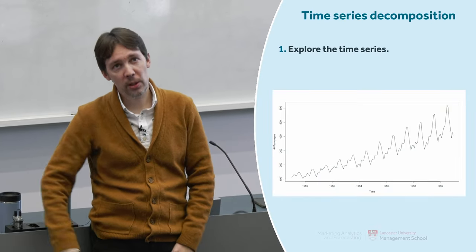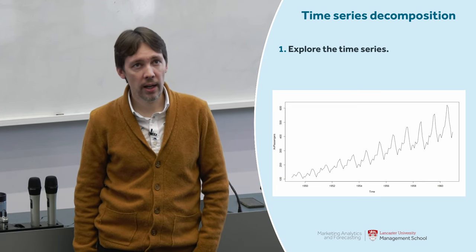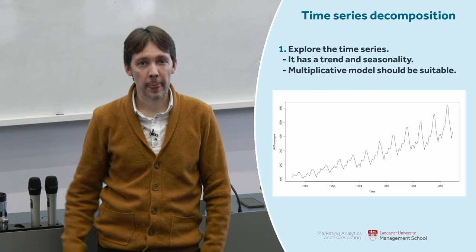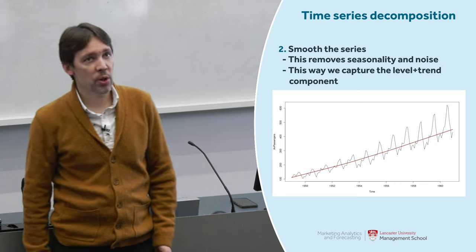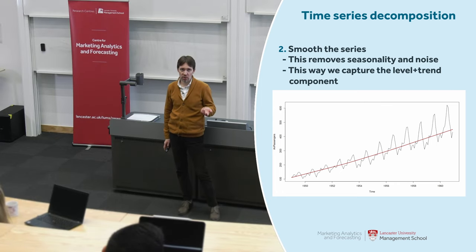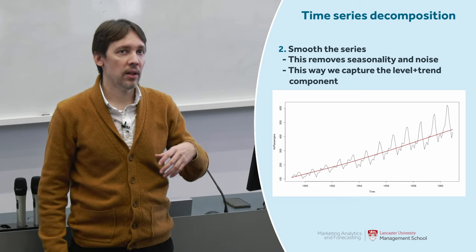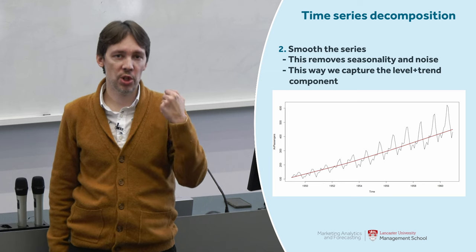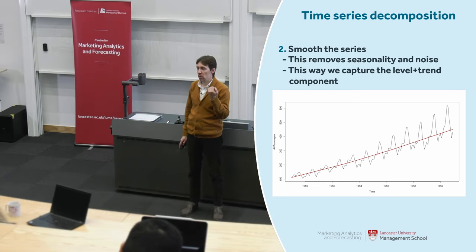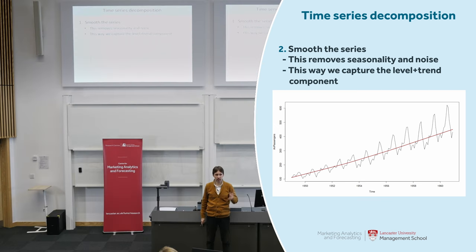Let's start with an example. We plot the time series and see there is a trend and expanding seasonality — so this must be a multiplicative seasonality time series, meaning we should use a multiplicative model. What do we do next? We smooth the time series. This can be done using a centered moving average (the classical approach) or more modern methods like LOESS smoothing. By smoothing, we get rid of seasonality and noise and just capture the trend component — the combination of level and trend.